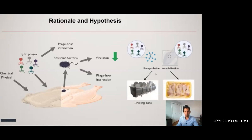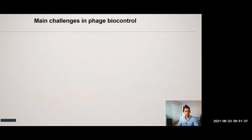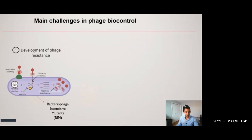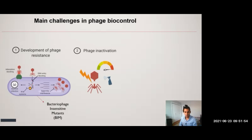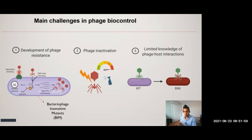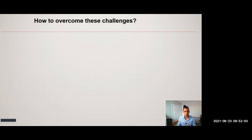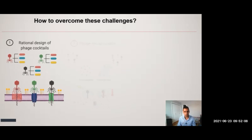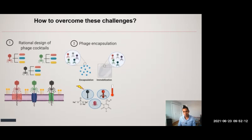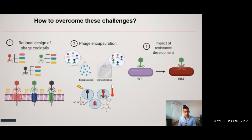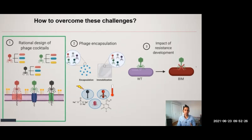We are planning to use either free phages, encapsulated phages, or immobilized phages in the two steps we consider critical for contamination, cross-contamination, and growth. The main challenges in phage biocontrol are: bacteria can develop resistance by different mechanisms — called bacteriophage insensitive mutants — phages can be inactivated by different environmental conditions in processing facilities, and there is limited knowledge about phage-host interaction. We can overcome these by designing a rational phage cocktail, protecting phages by encapsulation or immobilization, and studying the impact of resistance development. Today I am focusing on the rational design of the phage cocktail.